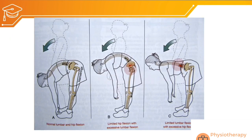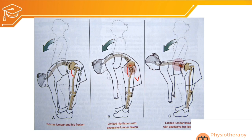The total lumbopelvic rhythm range is achieved by lumbar flexion, hip flexion, and anterior pelvic tilt together. If hip flexion is reduced due to hip joint stiffness or hamstring tightness, the lumbar spine compensates by flexing more, creating increased stress on the posterior tissues of the lumbar spine and exposing them to injury. Therefore, the posterior lumbar structures are more prone to injury when hip flexion is compromised.